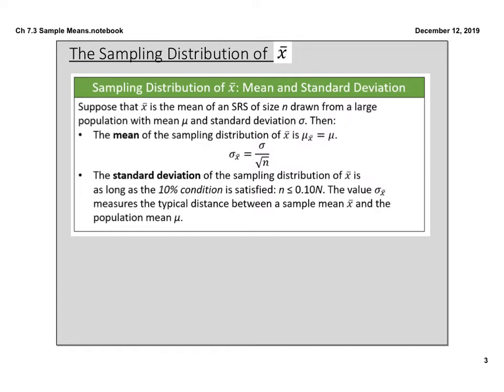Let's talk about the mean and standard deviation of this sampling distribution of means. When you find a sampling distribution of means and display them on a dot plot, the mean of that sampling distribution is going to equal your population mean — whatever your population mean is will also be your sampling distribution mean.